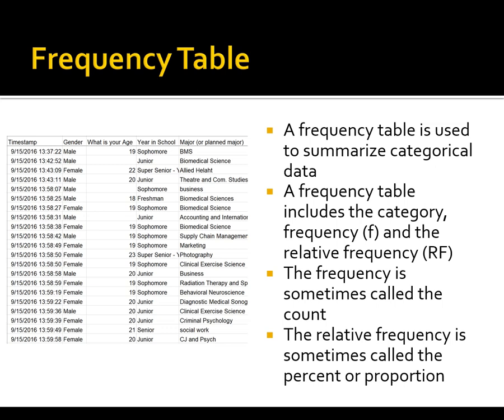Before we get to the frequency table, which is a way that we're going to summarize categorical data, I want to talk about the data in general. Over on the left, I have a snippet of some data used to create some of the graphics in this lesson. A couple notes on data: we should have one variable per column — time stamp, gender, age, year in school, and major. Some of these variables are categorical, and some are quantitative, and we're going to focus on categorical variables in this lesson.